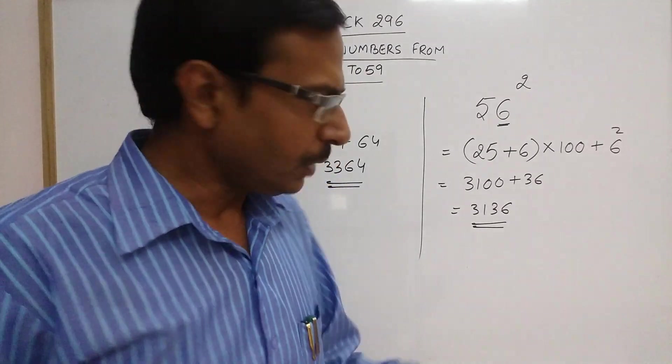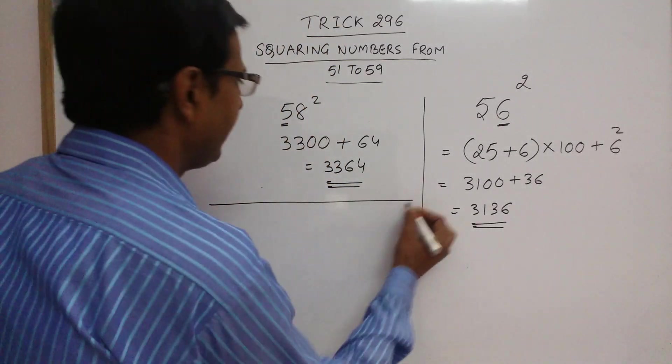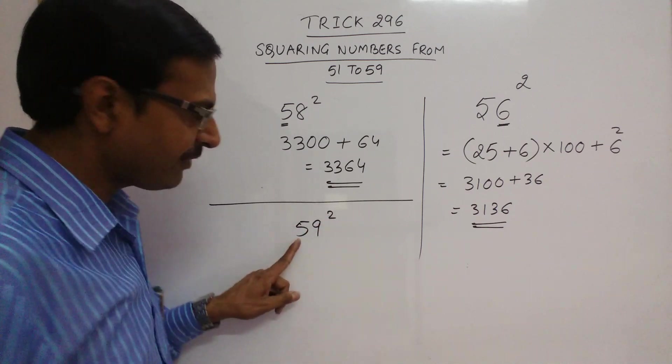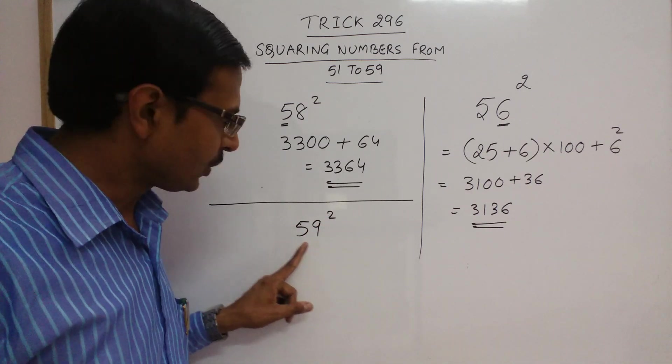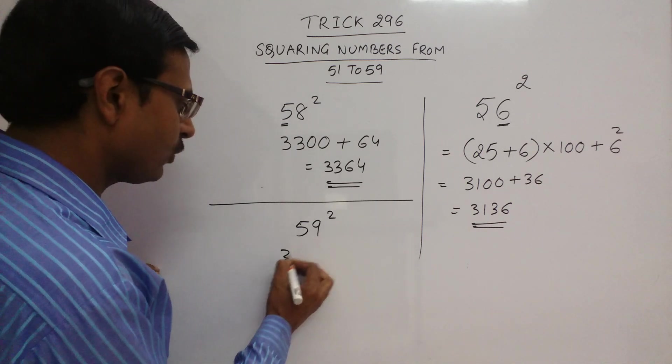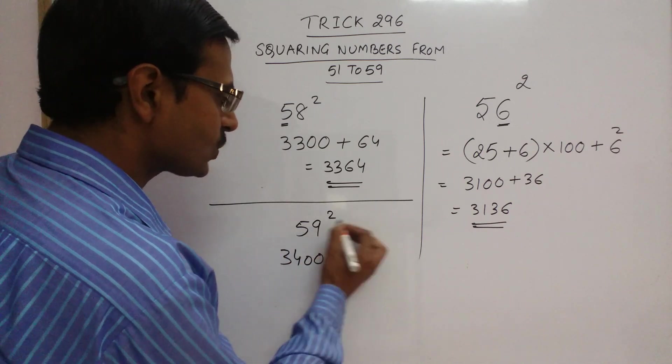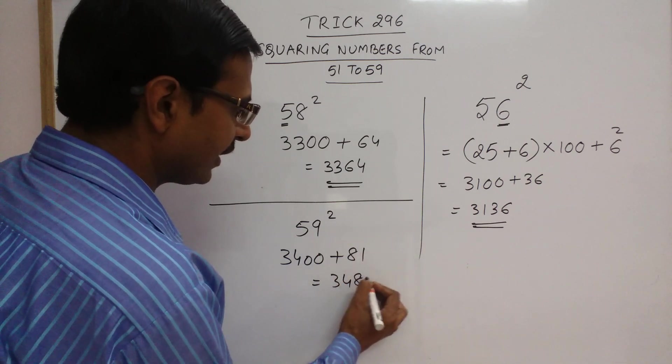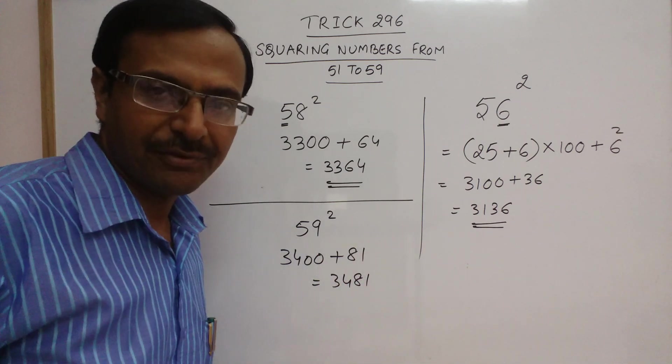More examples of such kind. Say we have 59 square. So 25, 5 square is 25. 25 plus 9 is 34. Now 3400, and what is 9 square? It is 81. So 3481 is the square of 59.